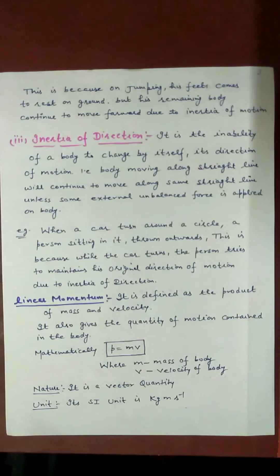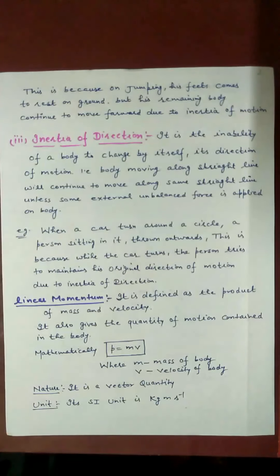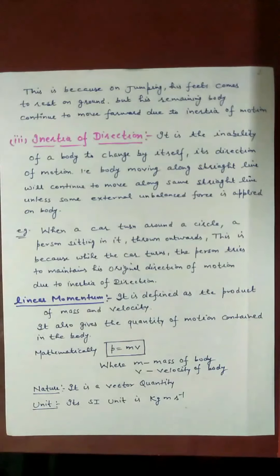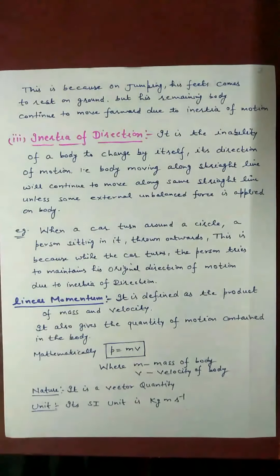If mass is zero, then linear momentum p = 0. If velocity is zero, then also p = 0. So p = m × v is straightforward. Please make notes from this lecture. The PDF link will be shared in the description box. You can also upload these pages and take a printout for preparation. Thank you very much.